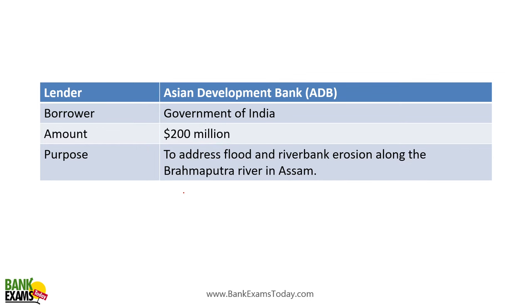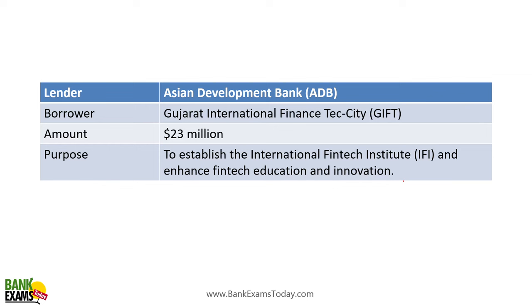Asian Development Bank lent Government of India 200 million dollars to address flood and riverbank erosion along the Brahmaputra river in Assam. Also, Asian Development Bank lent 23 million dollars to Gujarat International Finance Tech City (GIFT City) to establish an International FinTech Institute (IFI) and enhance FinTech education and innovation.